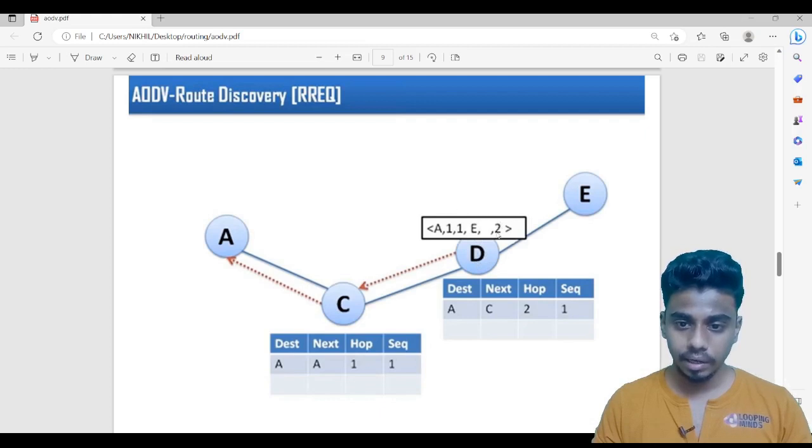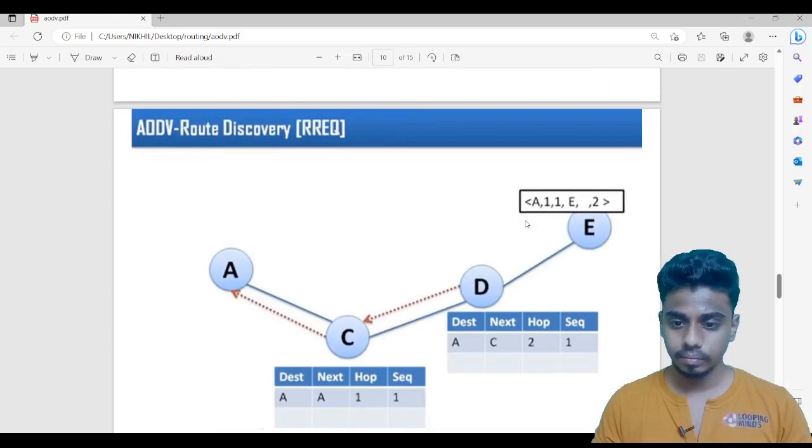Now hop count is increased. It will be passed to this one. It will again increase the hop count so that it can pass to E. It does not have any information about E. It will add the information about A in its routing table. If D has to reach A, it has to go to C in the next step. Hop count is 2, sequence number of A is 1. It will increase the hop count. When it came from C, it was 1, it will increase it to 2 and now this will be passed to E.